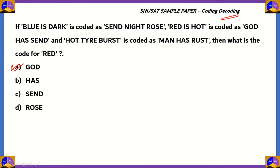The basic thing about coding and decoding is that if you have a word translated to a code, you have to find the relation between the letters. Here, the technique is that since you have sentences, find common words and then eliminate their codes, and you'll definitely be able to determine the correct answer. In this particular case, 'is' is the same as 'scent', and 'hot' is the same as 'has'. We recognized both of these because of repetition, and after that the only word left was 'red', and its code had to be option A, which is 'god'.